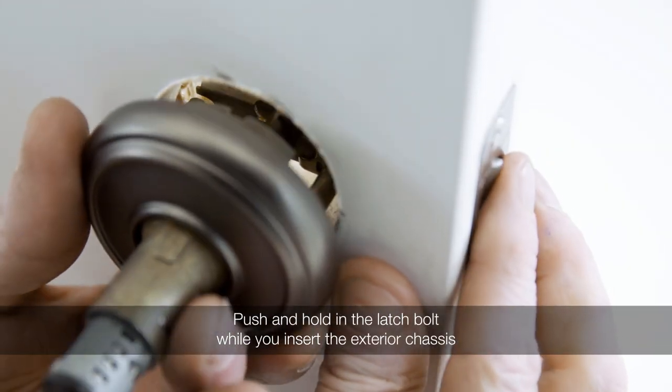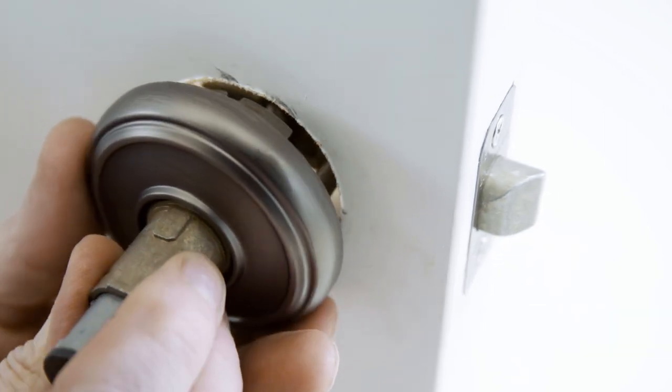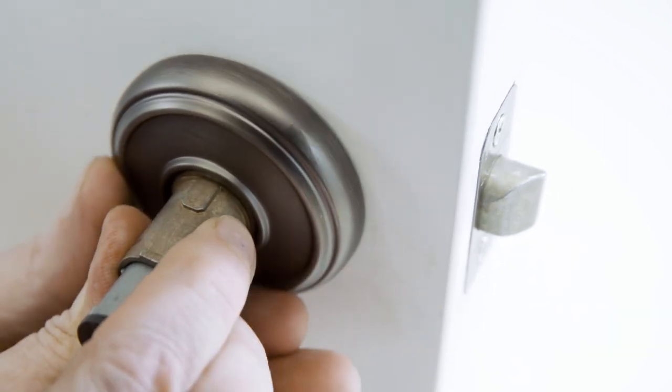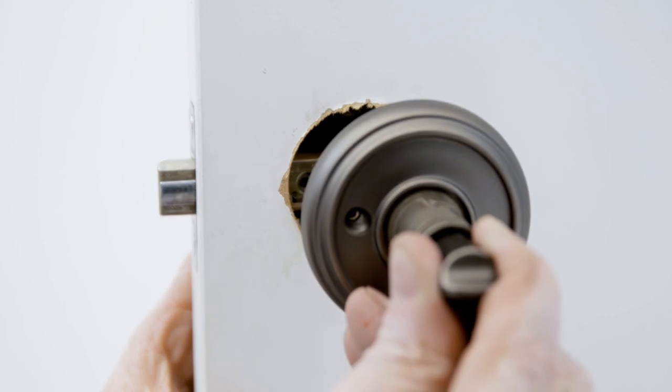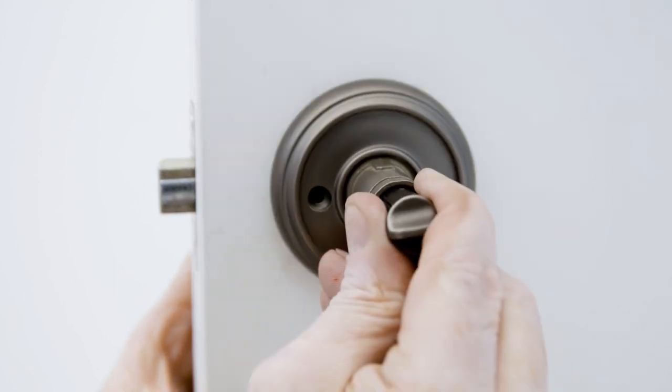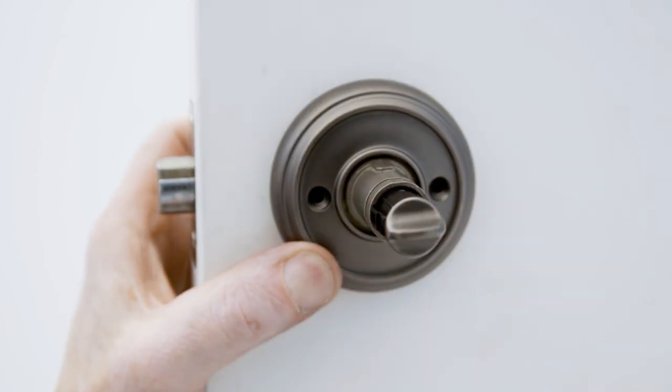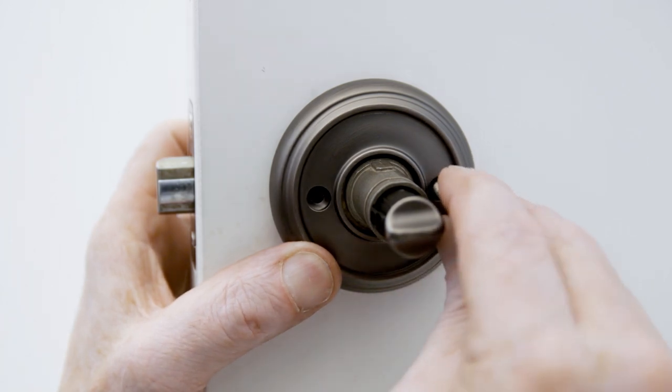Push and hold in the latch bolt while you insert the exterior chassis. Install the interior trim and fasten with the two screws.